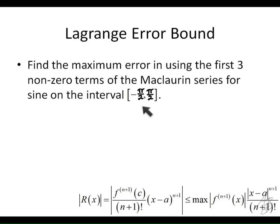the interval we're using is negative pi over 2 to positive pi over 2. This interval is really useful because of the periodic nature of sine — if we know the value of sine anywhere between negative pi over 2 and positive pi over 2, we can find the value of sine anywhere from negative infinity to positive infinity. So we're going to use the first three terms of the Maclaurin series for sine.